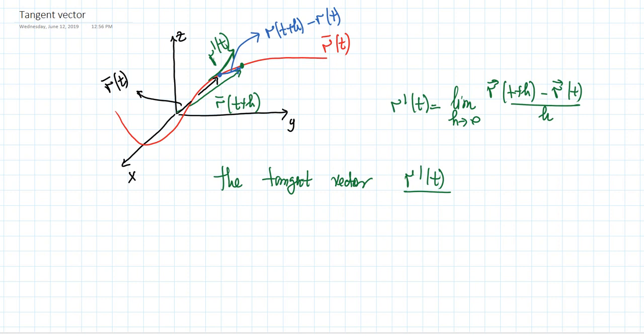It also shows us how much the curve is changing at a given point. Depending on where we are located on the curve, the vector R prime of t might have different lengths. If the change is large, this vector might be long. If there are small changes, this vector might be short.